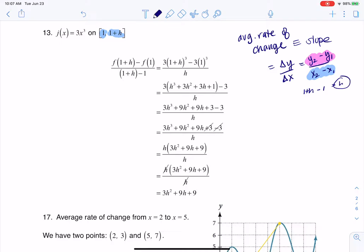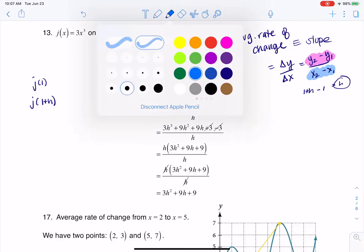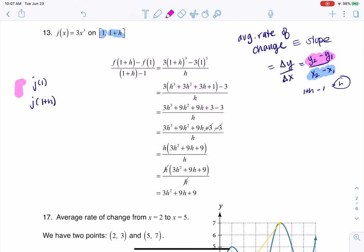But I need to find a way to get to the y values, and how you find y values is if you're given an x value, plug it into your function. So what I mean by that is I need to find j of 1 and j of 1 plus h. So that's how I'm going to work through, and I'll color code these. That's how I'm going to get those y values, and once I find those, I'll subtract them as well. So let's take a look at j of 1.